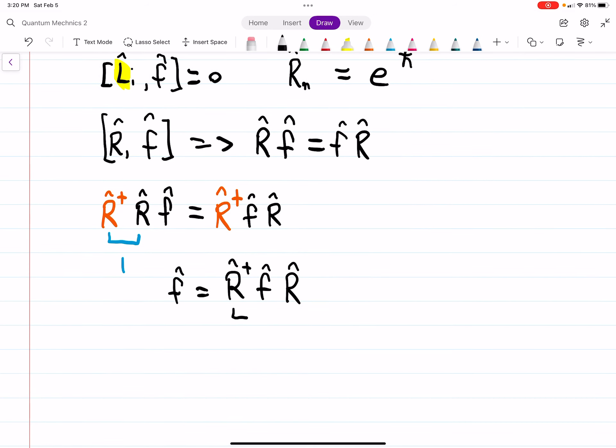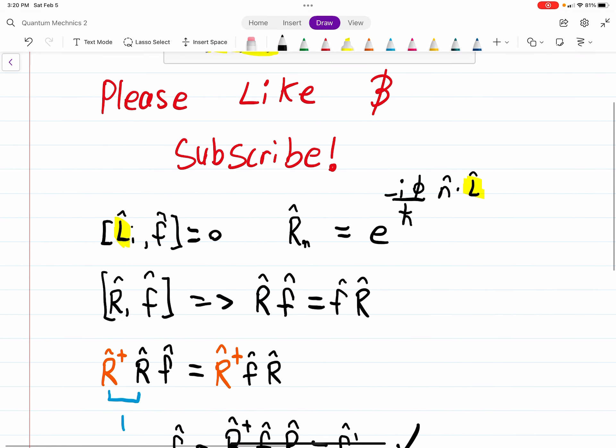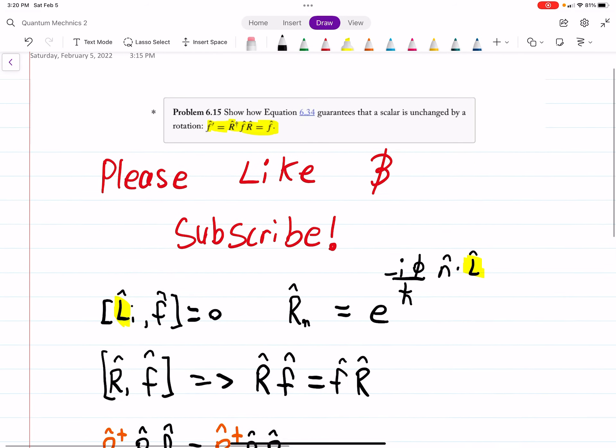And this, of course, is f prime. So that's the proof for this. We see that f equals f prime, using the same kind of stuff we did in the last video.